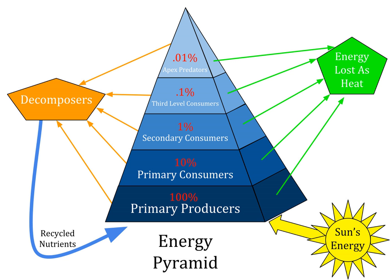The concept of pyramid of numbers, known as the Eltonian Pyramid, was developed by Charles Elton. Later, it would also be expressed in terms of biomass by Boddenheimer. The idea of pyramid of productivity or energy relies on the works of G. Evelyn Hutchinson and Raymond Lindeman.